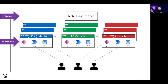For example, if you create a Dataverse database in TQ Australia, that means that database is created in a data center which is located in Australia. Moreover, any items that you create in an environment — which includes connections, gateways, flows using Power Automate, or any other thing — are also bound to their environmental location because they are contained within the environment.